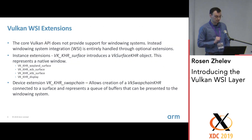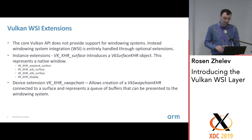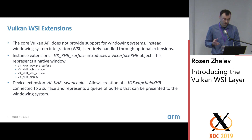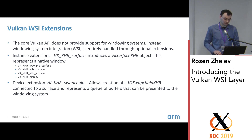So how does windowing system integration work in Vulkan? It's actually not part of the core Vulkan API — you can have a driver that just renders things to memory without caring about displaying it to a user. If you want to display, there are extensions: there is a surface object, which is the native window connection, with a specific extension for different windowing systems to create the appropriate window. And there is the swapchain, which is essentially a queue of all the images that will get sent to the windowing system to get presented to the user.